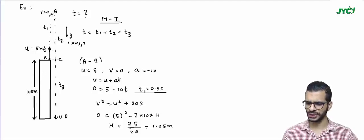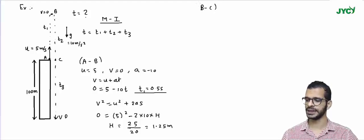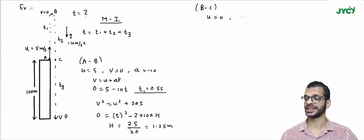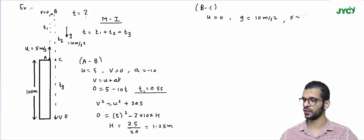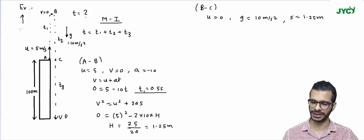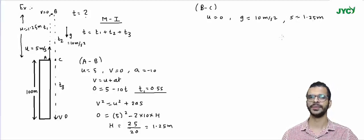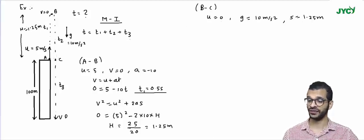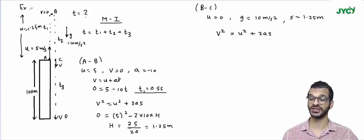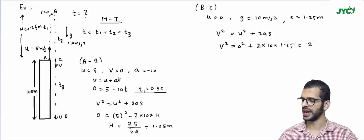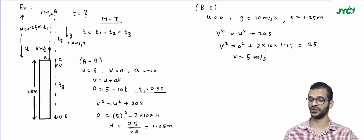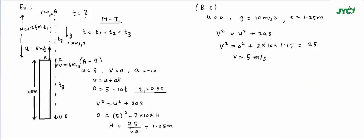For part B to C, the ball comes back down 1.25 meter. The initial velocity is 0 and the acceleration due to gravity is 10 meter per second square downward. The distance is 1.25 meter. Using v² = u² + 2as with positive signs: v² = 0 + 2 × 10 × 1.25 = 25, so velocity at C equals 5 meter per second.